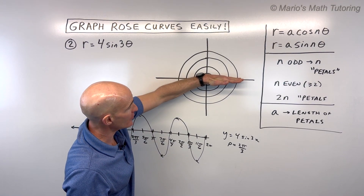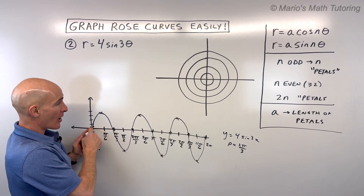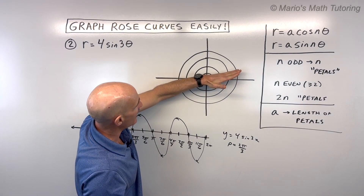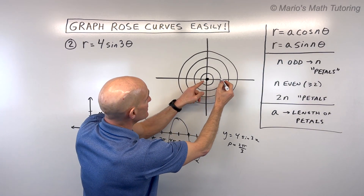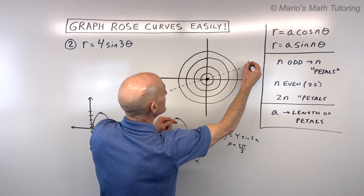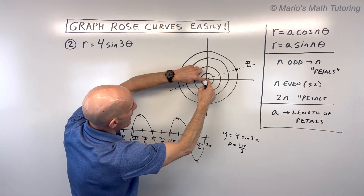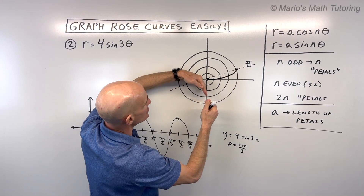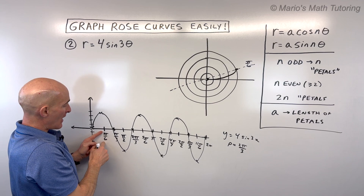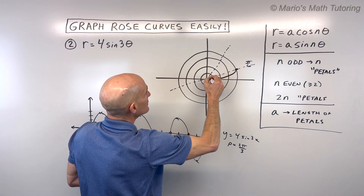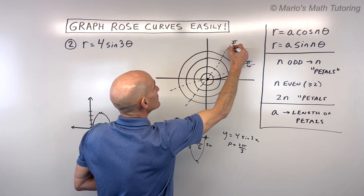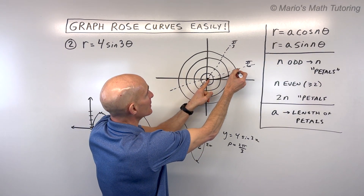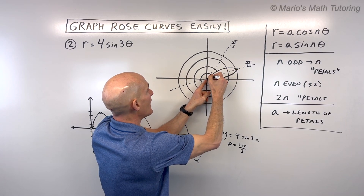Starting at 0 radians, the r value is 0, so we're at the pole. As I make my way out to π/6, which is about a 30-degree angle, I reach a maximum r value of 4. So as you're turning, the r value is getting longer — spiraling out. Then from π/6 to π/3, the r value gets smaller and smaller until it returns to 0 — reeling it back in.